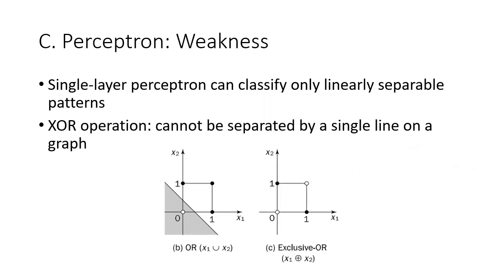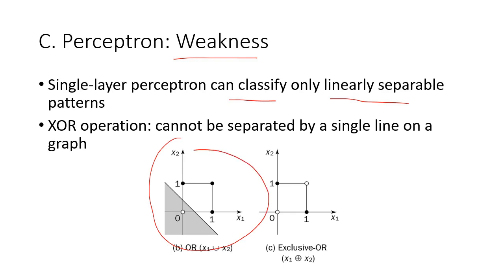Single-layer perceptron, however, has a huge weakness: it can only classify linearly separable patterns — things that can be separated on a graph with a straight line. Therefore, if you have something like an exclusive OR (XOR) operation, you cannot classify it using a single-layer perceptron.